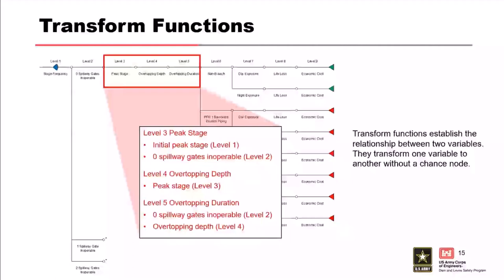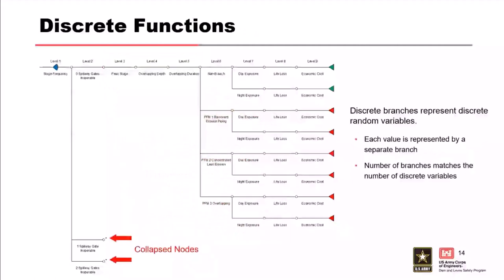There's a question: do probabilities of zero, one, and two spillway gates inoperable have to equal one when summed? The answer is yes—all nodes need to be collectively exhaustive and must sum to one.